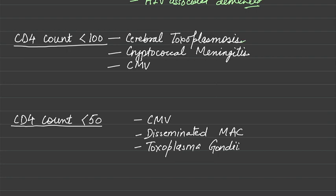When the CD4 count is less than 100, the common infections are cerebral toxoplasmosis and cryptococcal meningitis. Cryptococcal meningitis is very common in HIV-positive patients presenting with meningitis, and it is always mandatory to test for cryptococcal antigen in the CSF. The third is CMV — cytomegalovirus infection.